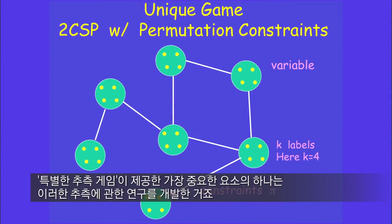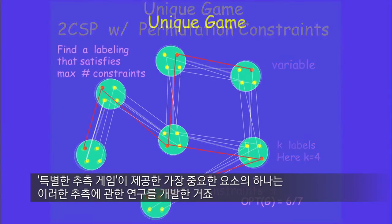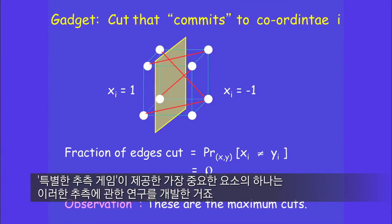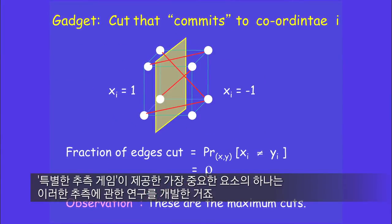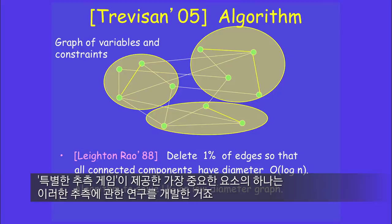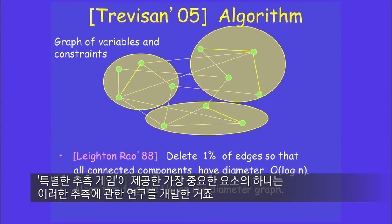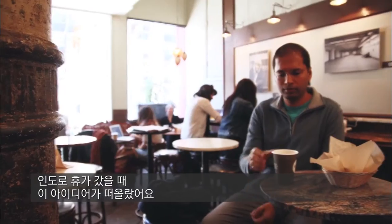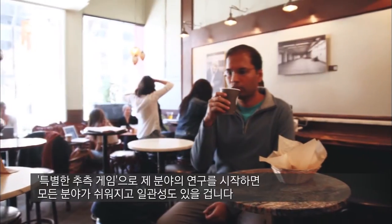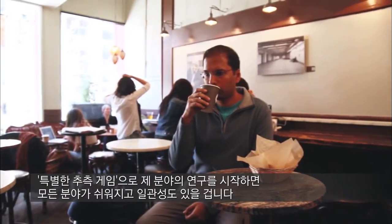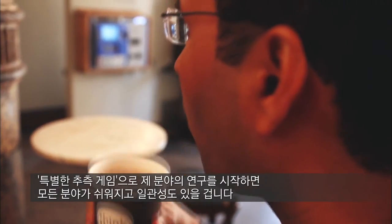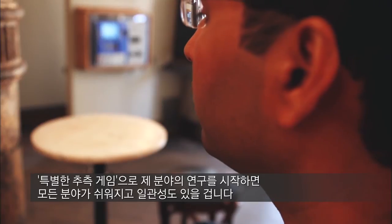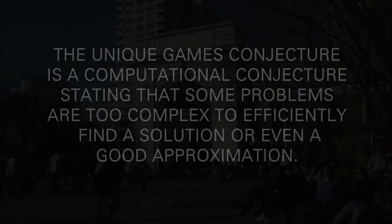One of my important contributions has been proposing the Unique Games Conjecture and then developing research around this conjecture. I was vacationing in India, visiting family. This small idea came to me that if I use the Unique Games Conjecture as a starting point of my field of research, it would really make the whole field easier and very consistent.